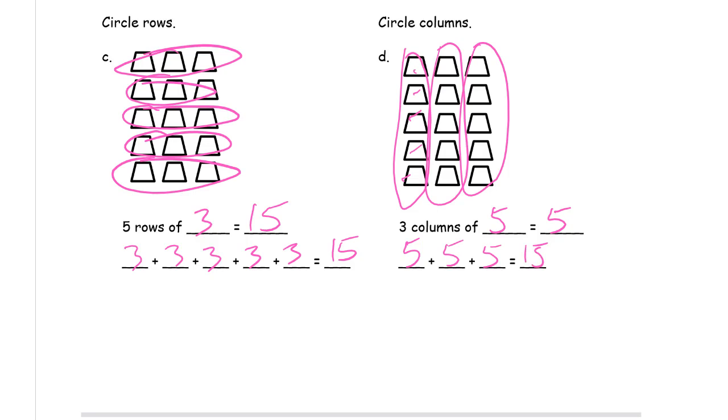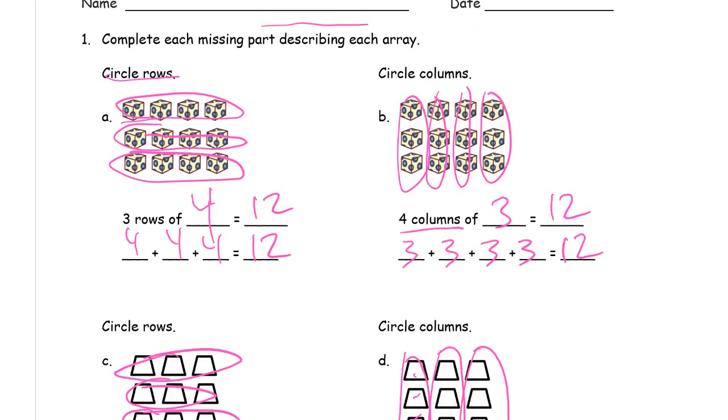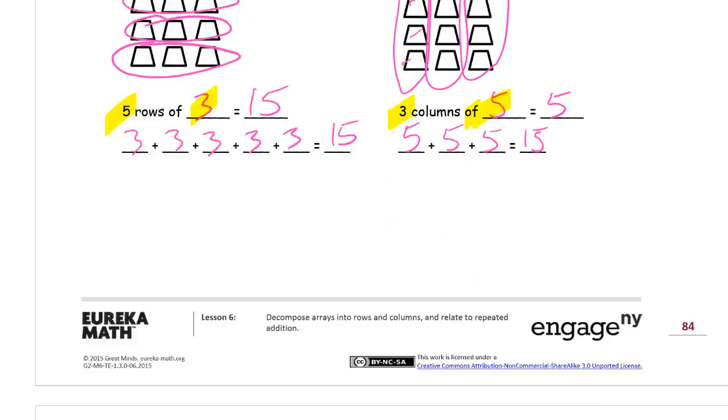And you start to notice this if you haven't already, and you may have noticed it in class. Five rows of three, three columns of five. And if we go up here, three rows of four, four columns of three, and it equals the same total.